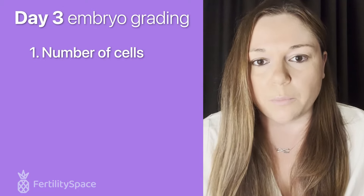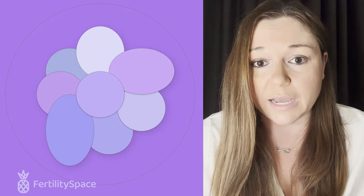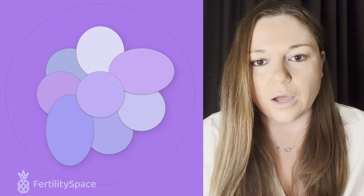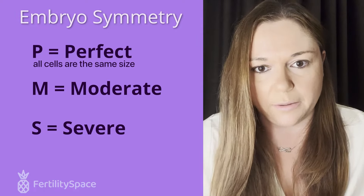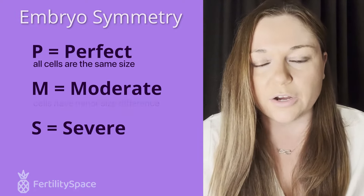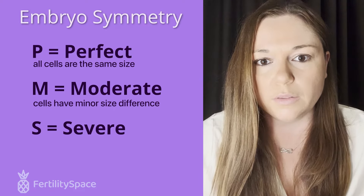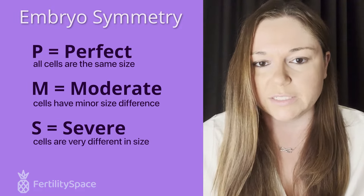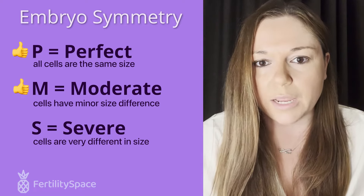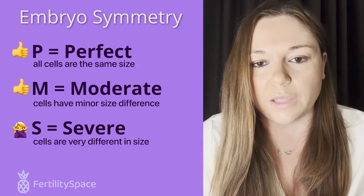The next thing we grade embryos on is their symmetry — are all of the cells similar in size, or are there differences? This is graded on a P for perfect scale, meaning all cells are exactly the same; M for moderate, meaning there are some differences in cell sizes but they're still roughly the same; and severe, meaning the cells are severely different in size. Perfect and moderate are acceptable, but severe asymmetry is considered abnormal on day three.